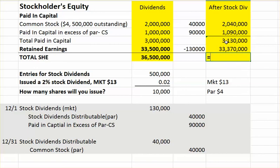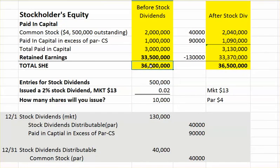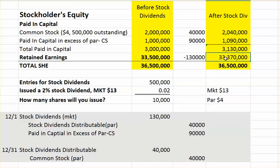Total stockholders' equity would then be $36,500,000. You see here that that's exactly the same as before the stock dividends were declared. We had $36,500,000 worth of stockholders' equity and after the stock dividend we still have $36,500,000, but the paid-in capital is more and retained earnings is less. So it's a shift in equity when you offer a stock dividend.